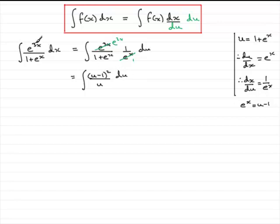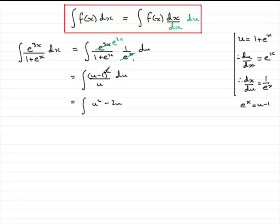We've achieved our aim — we've changed the integral, which was a function of x being integrated with respect to x, into a function of u being integrated with respect to u. Now we need to expand the bracket. Expanding in the usual way gives the integral of u squared minus 2u plus 1, all over u. We can think of this as putting each term over u.